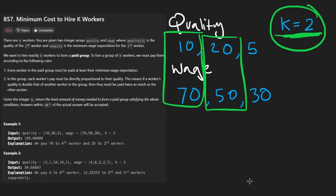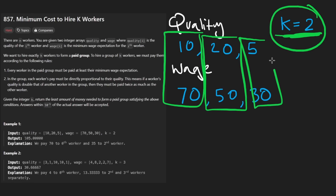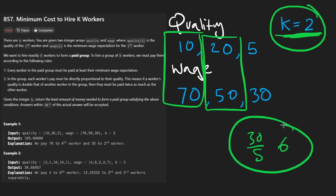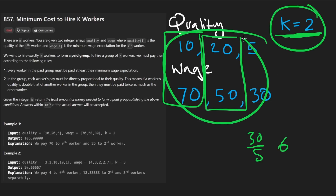When we get to this third person, we can calculate their rate — it's 30 over five, that's six. I don't really know how to consider a solution; we have many possibilities. What we could do is say, okay, let's include this one...